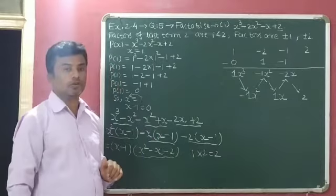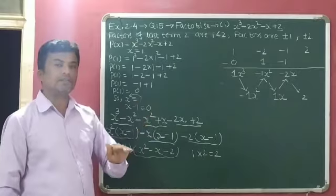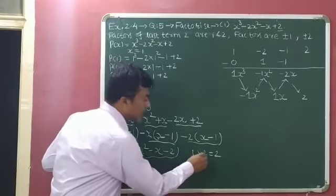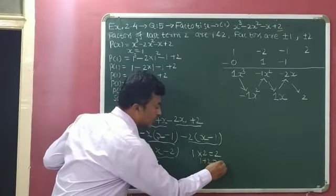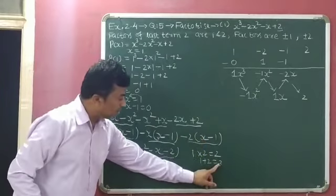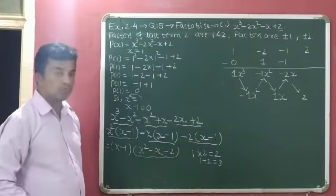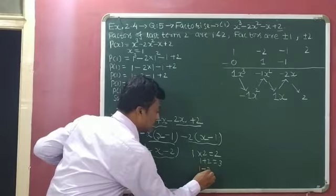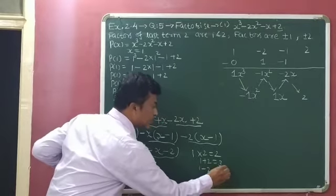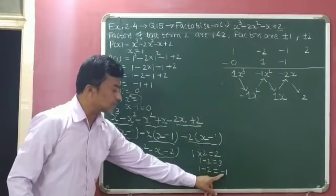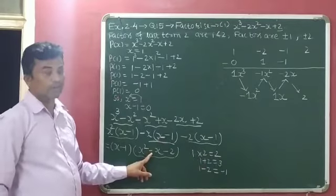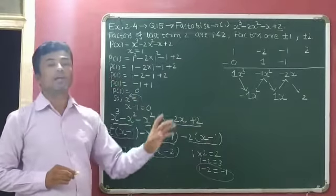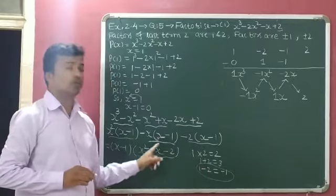So 1 and 2 are both factors of 2. Now we will add them and subtract them to check if the middle term minus 1 will come. We add: 1 plus 2 equals 3 — but we want minus 1, so that is not possible. Now we subtract: 1 minus 2 equals minus 1 — and we want minus 1 only. So this is the right pair for factorization: 1 and minus 2.